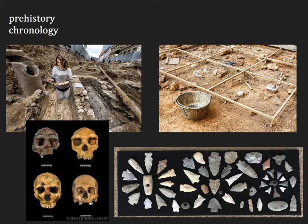So first, what is chronology? Chronology is the science of arranging events in the order of their occurrence — basically figuring out what came first, second, third, etc.